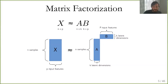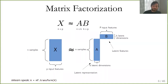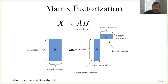Matrix A is number of samples times latent dimensions — the latent representation for each row in the dataset in K-dimensional space. In PCA, these are the points projected to the lower-dimensional space. Matrix B is the weight matrix, which relates the original input features to the latent features — in PCA, these are the principal components. A is the latent representation, and B relates original features to latent features.